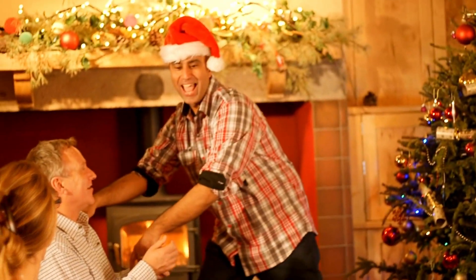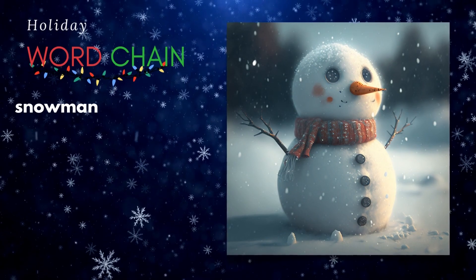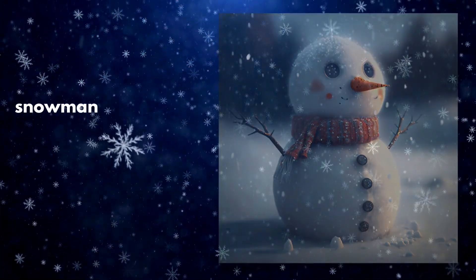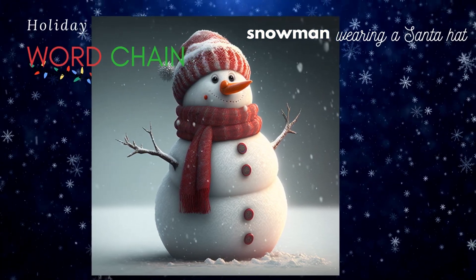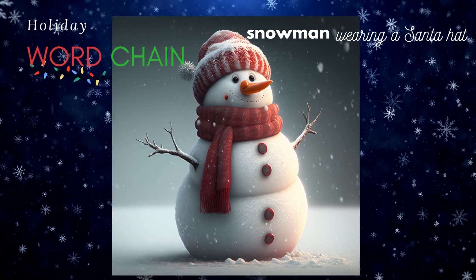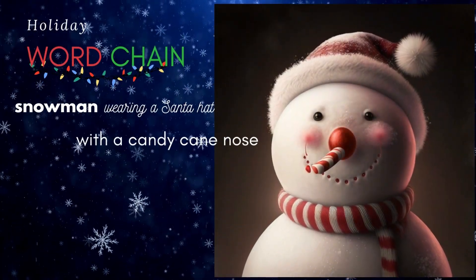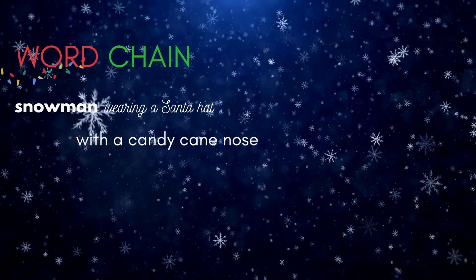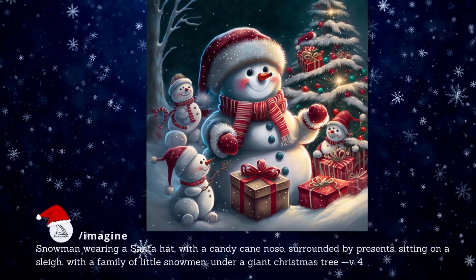Holiday Word Chain is a family game that everyone can play. Start with a holiday word — something like Snowman — and generate an AI image. Now add a word or phrase related to the first word, for example, Snowman wearing a Santa hat. Then add another word or phrase expanding the scene with an imaginative addition, like Snowman wearing a Santa hat with a candy cane nose. After each addition, generate an AI image. Keep going until the scene runs out of steam or until the images just get too wacky.